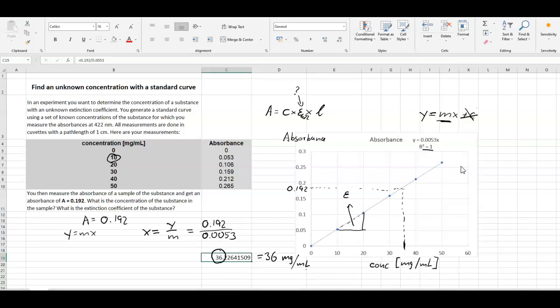We said if we make epsilon now the subject, epsilon equals absorbance divided by the concentration times length. We've got an absorbance of 0.053 divided by the concentration. And we had 10 milligram per milliliter times one centimeter.